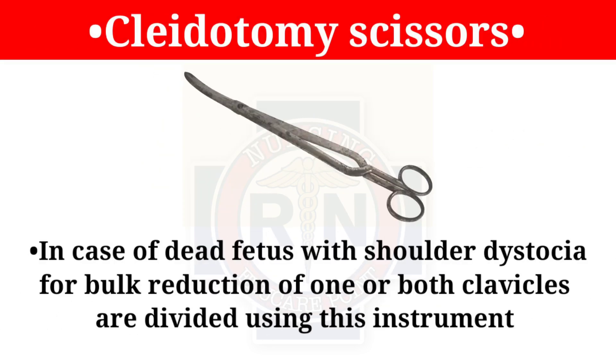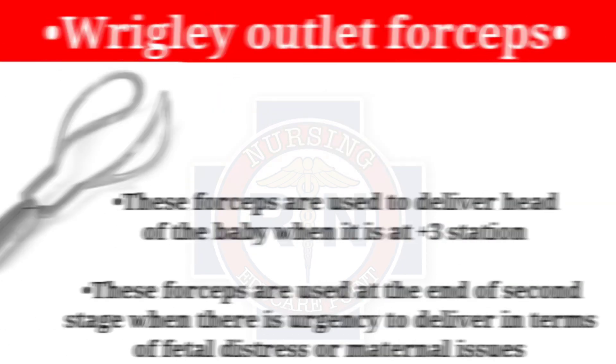Clavicotomy scissors. In the case of a dead fetus with shoulder dystocia, one or both clavicles are divided for bulk reduction using this instrument.